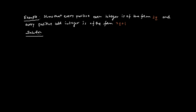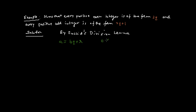By Euclid's division lemma, we know that a is equal to bq plus r, where r is always greater than or equal to 0 and less than b, and here a and b are positive integers.